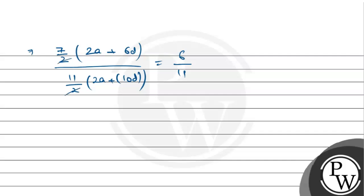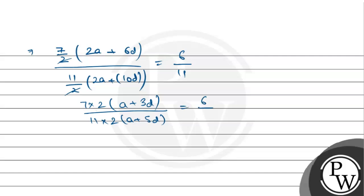अब इसको simplify करेंगे तो 7/2 and 11/2 cancel होंगे। Multiplying out: 7 × (2a + 6d) / (11 × (a + 5d)) = 6/11. 11 से 11 cancel होता है, तो हमें मिलता है: 7(2a + 6d) / (a + 5d) = 6, यानी (7a + 21d) / (a + 5d) = 6.